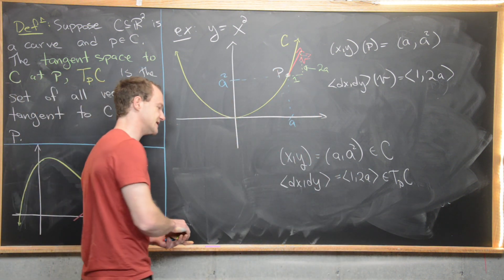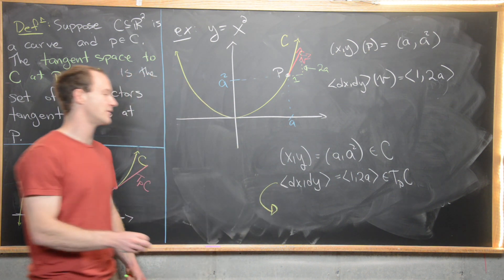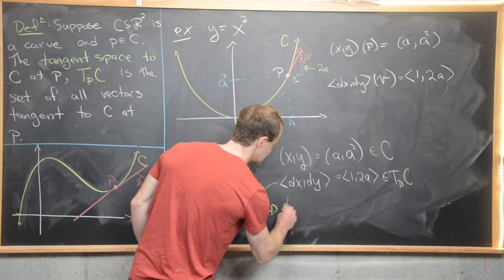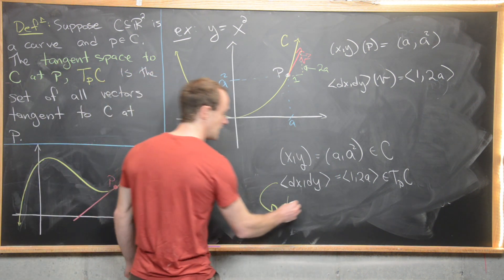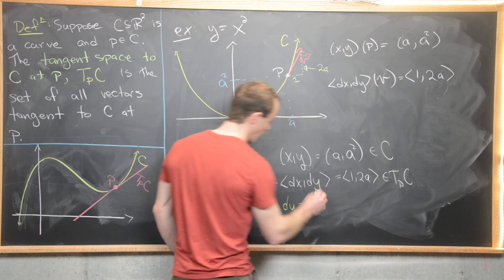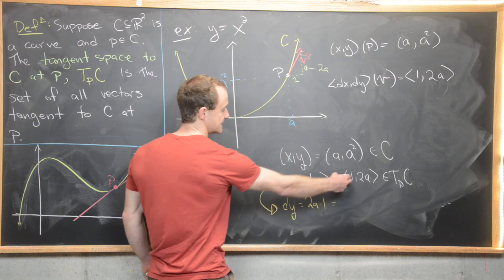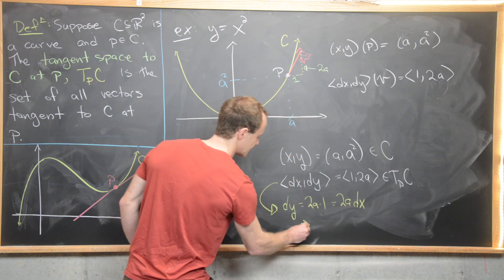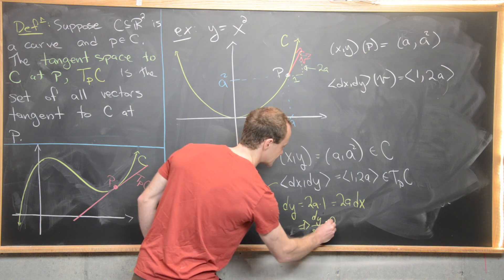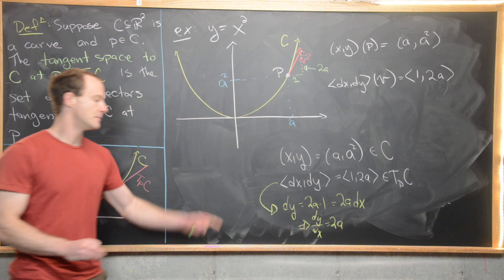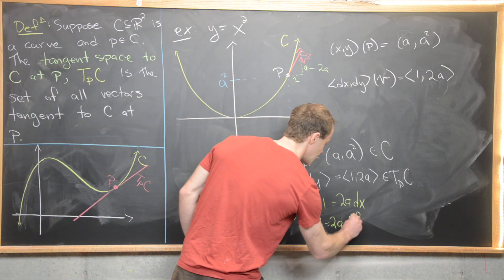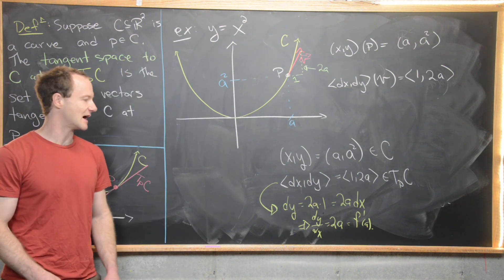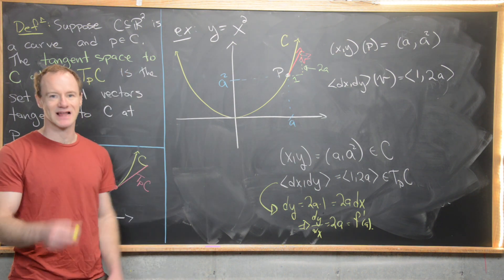This careful choice of notation backs up what we've seen in calculus. Notice here we have dy equals 2A times 1, but 1 is the same thing as dx, so that's 2A times dx, which tells us that dy divided by dx equals 2A — exactly equal to the derivative evaluated at A. So we're replicating the ideas from Calculus 1 just in a slightly different setting.